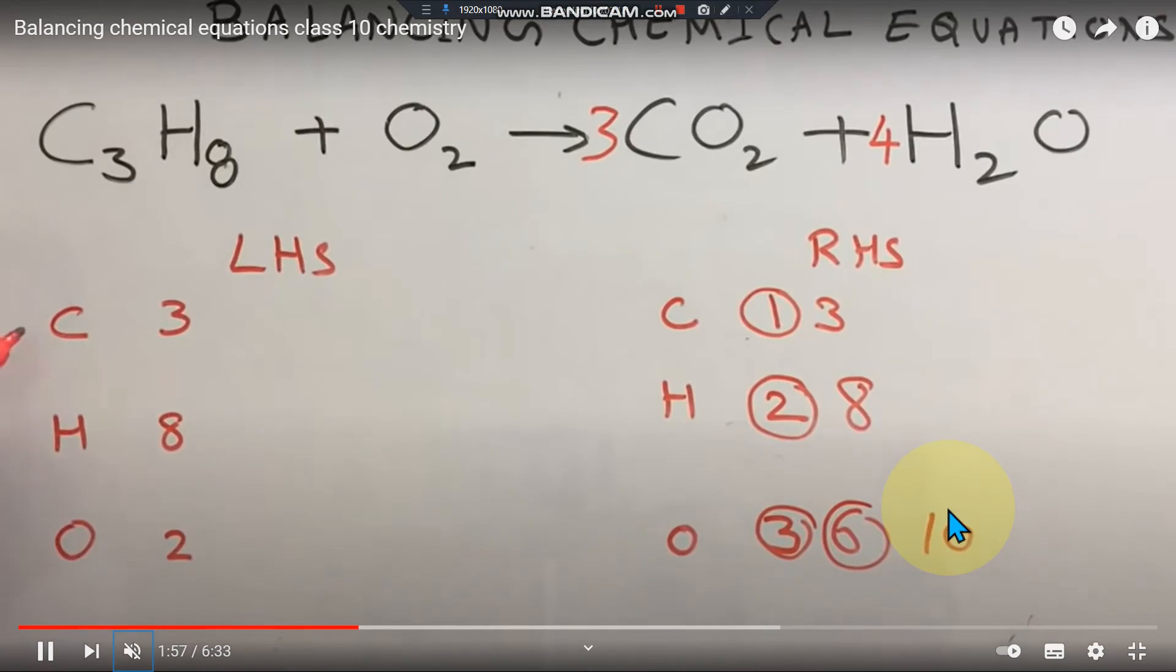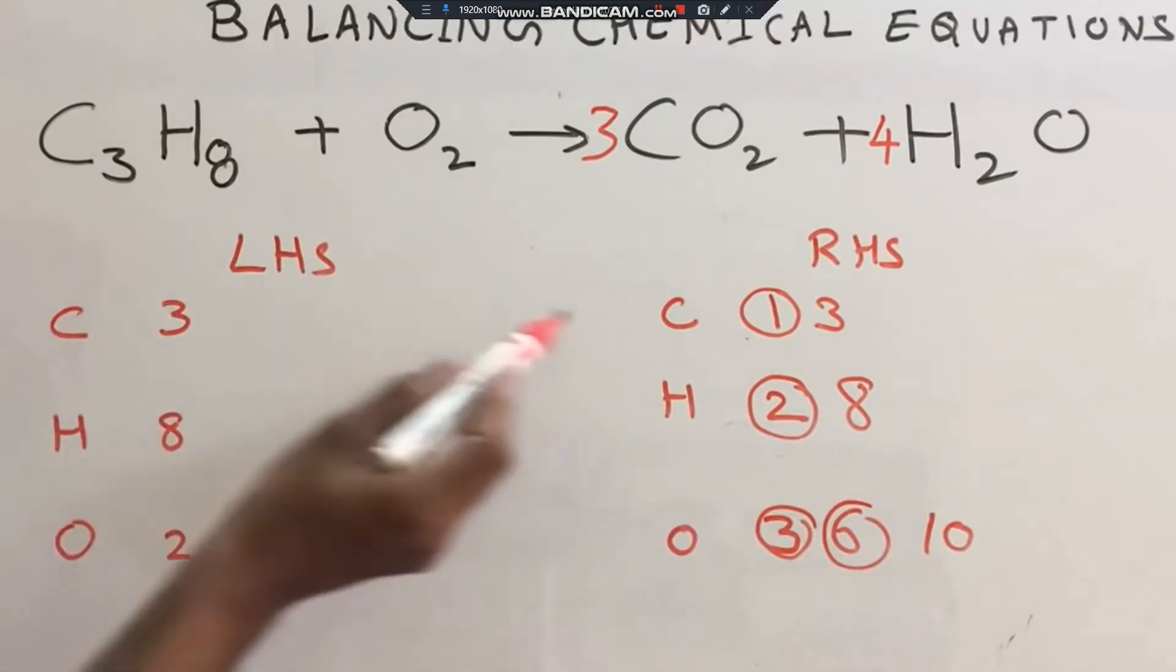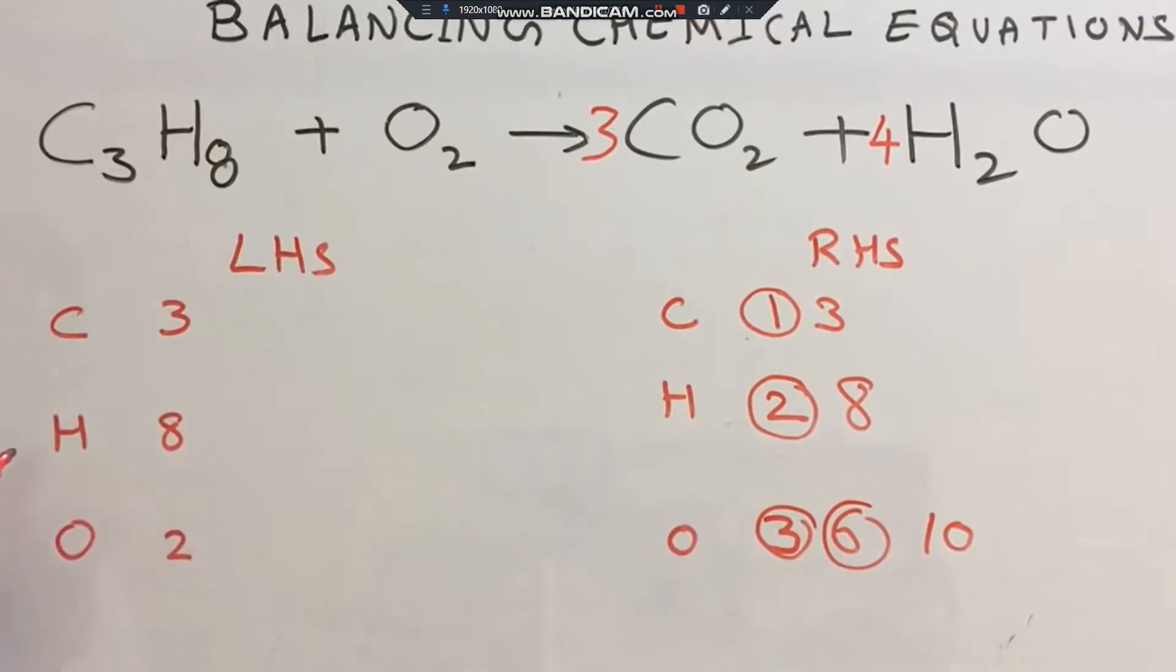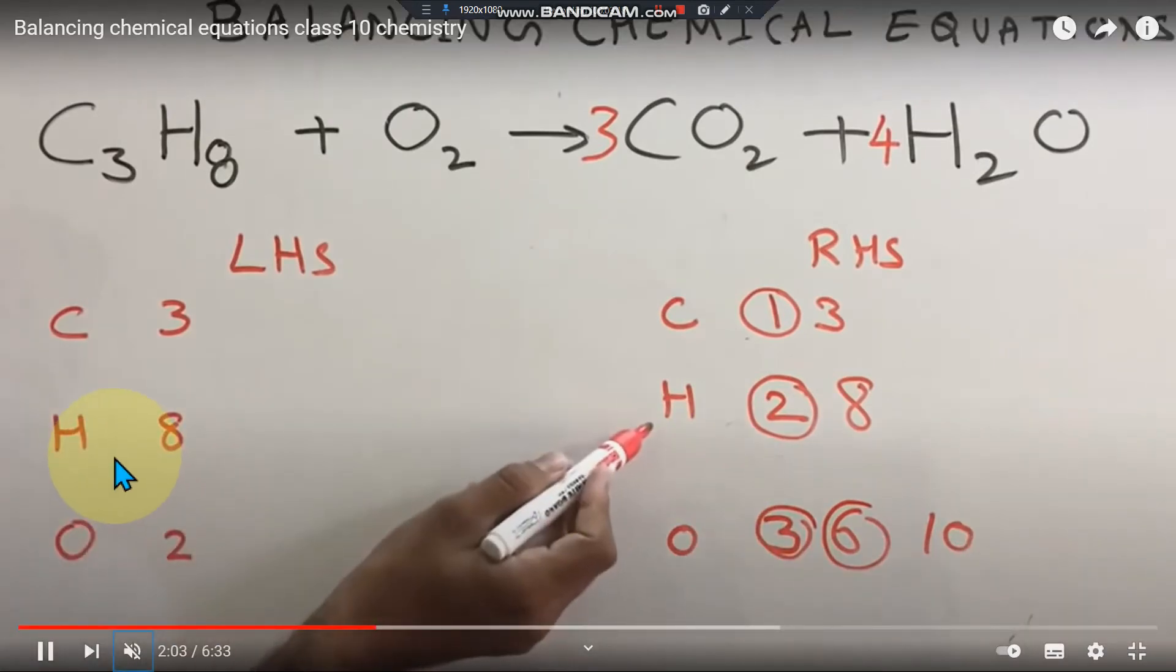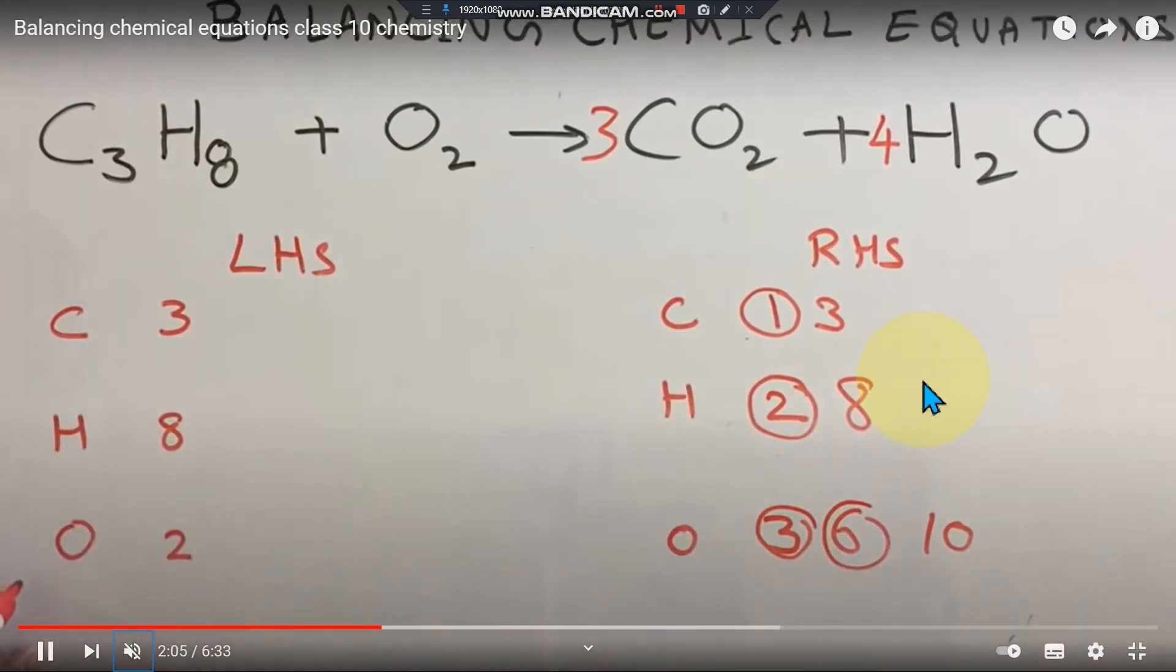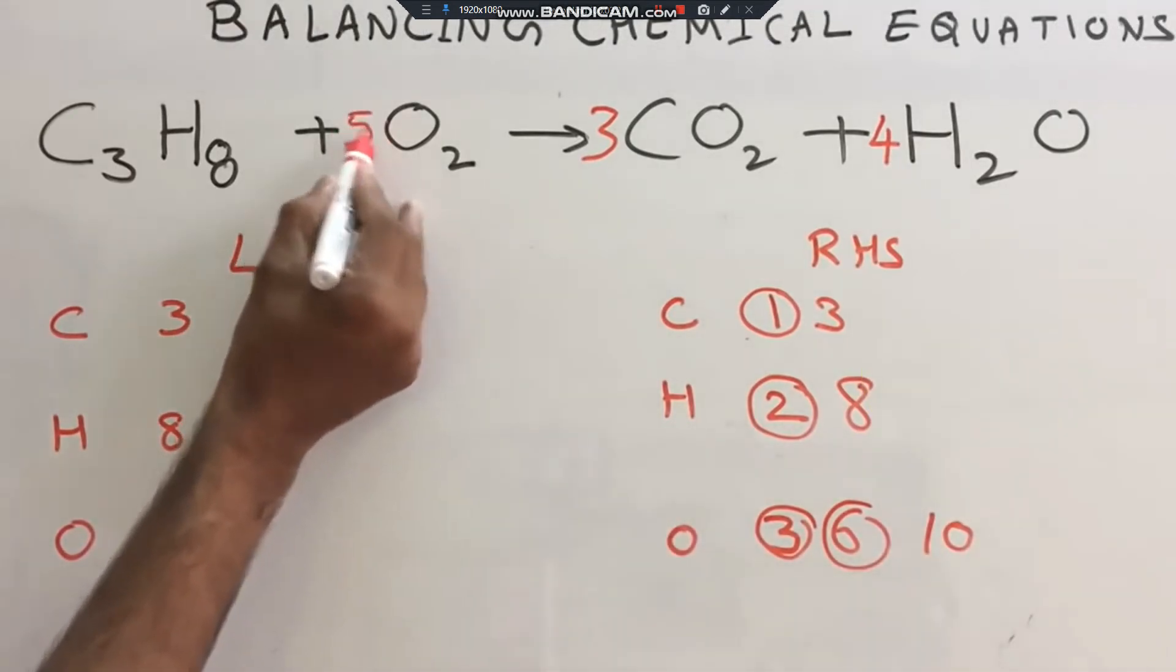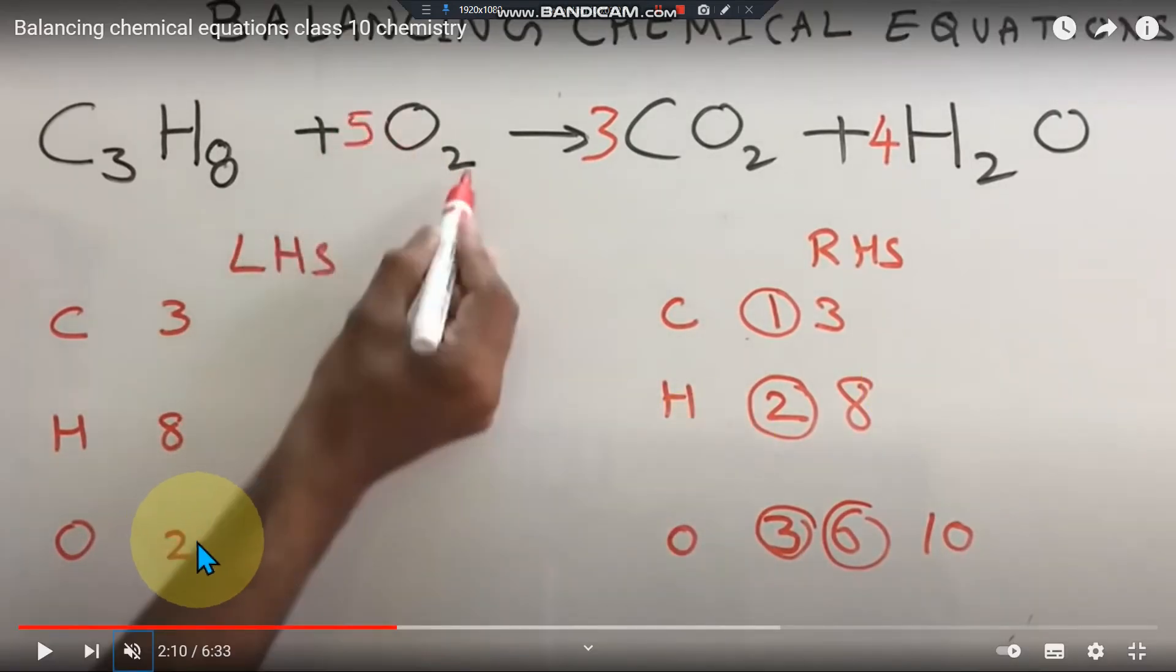So now carbon is 3, that's the same. Hydrogen is 8, same on both sides. Right, oxygen - let's check. On the right we have 10 oxygens total. So 10 - 5 times 2 equals 10. Oxygen is 10, balanced. So 5 O2 on the reactant side and 10 oxygens on the product side.